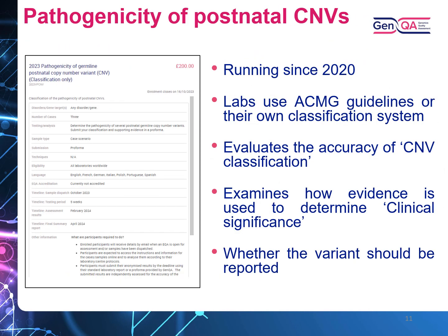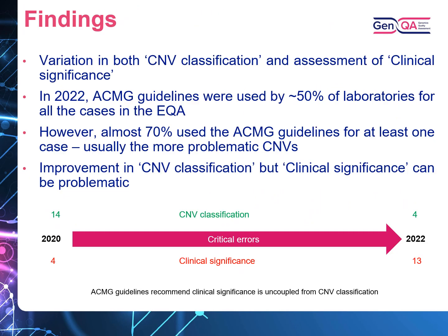We've been running the pathogenicity of postnatal CNV EQA since 2020. The laboratories use either the ACMG guidelines or their own classification to assign the CNV pathogenicity, submitted via a form on our website. We look at three things: the accuracy of the CNV classification (classes 1 to 5), how evidence is used to submit a clinical significance classification, and whether the laboratories would report the CNV. The number of critical classification errors has fallen over the years; however, the clinical significance is still problematic, likely due to laboratories not uncoupling the classification from the phenotype. It also sometimes depends on the particular CNVs for that year, and the guidelines can be difficult to apply.